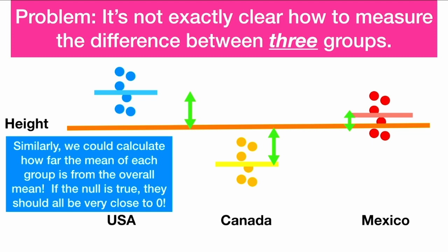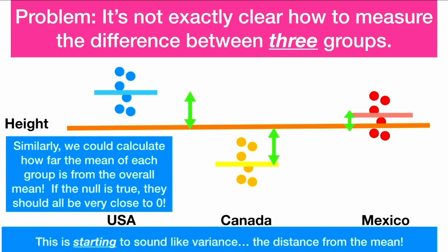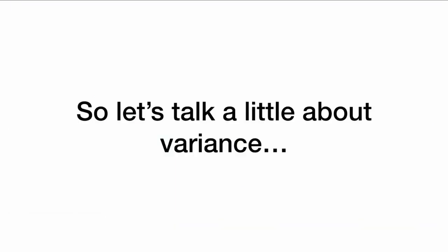This is some measurement of how well our data meets our null hypothesis. If the null is true, these green arrows — these distances — should be very close to zero. So maybe we could measure these distances, or maybe we could square these distances and add them up. When we start to talk about squaring distances from the mean, this is starting to sound a lot like variance. So let's talk a little bit about variance.